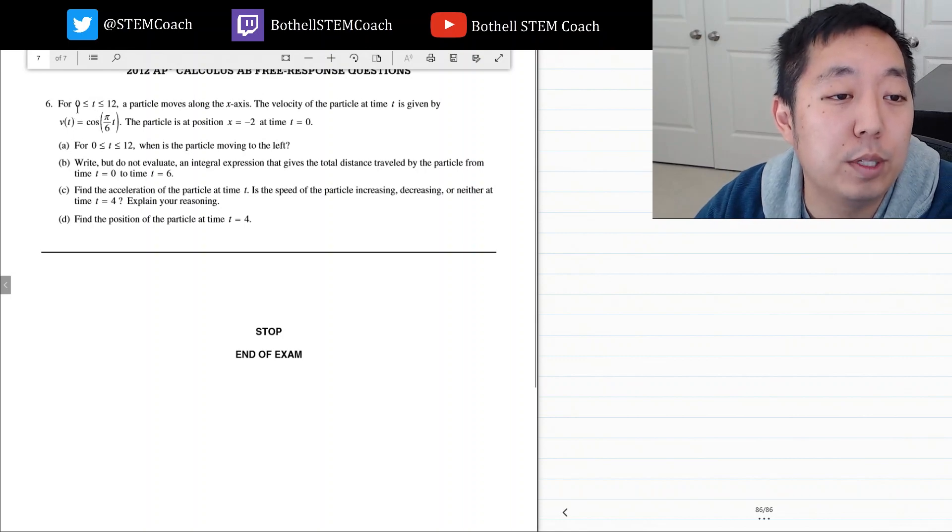For t between 0 and 12, a particle moves along the x-axis. The velocity of the particle at time t is given by cosine pi over 6t. The particle is at position x equals 2 at time t equals 0.